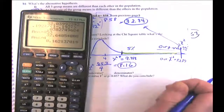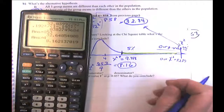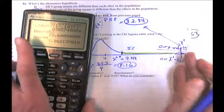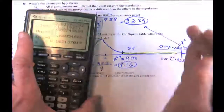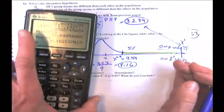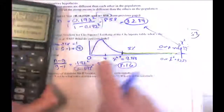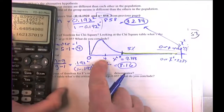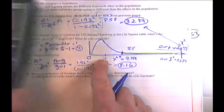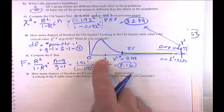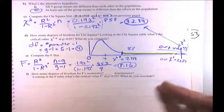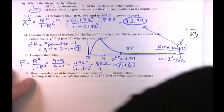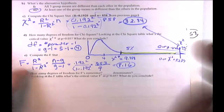Our p-value is not going to be different. It's just that instead of being centered around 4, our F-curve is centered around 1. So let's draw that picture. The F has 4 degrees of freedom in the numerator and 853 in the denominator.